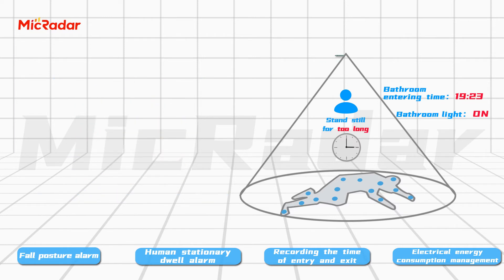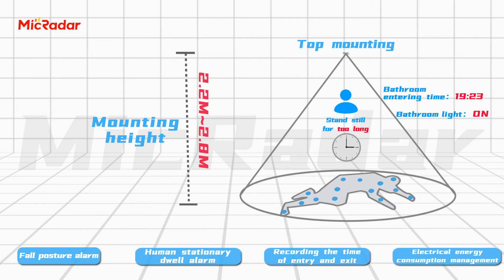The Fall Alarm Radar is currently based on a top mount, with mounting heights ranging from 2.2 meters to 2.8 meters.